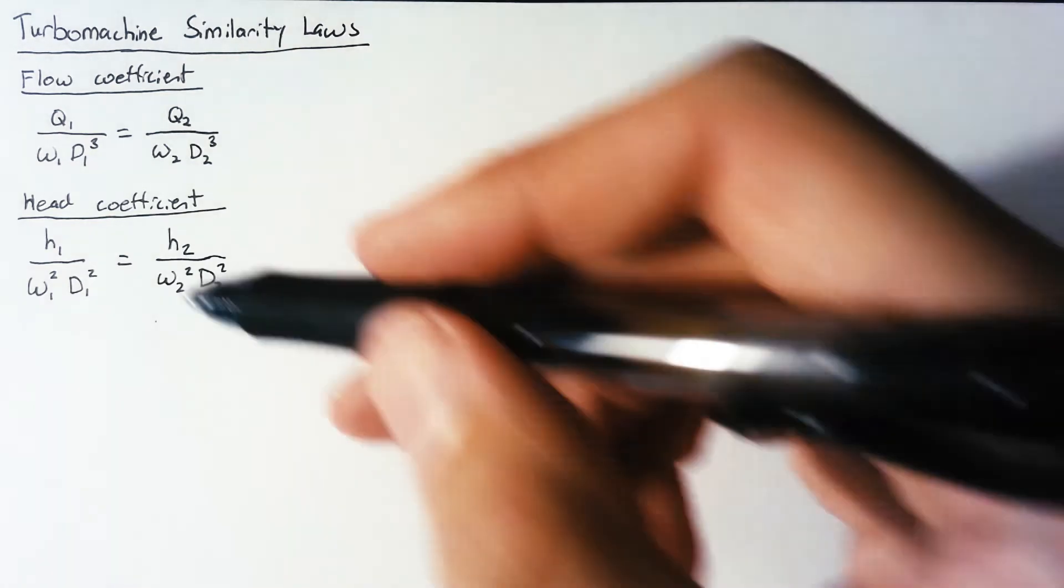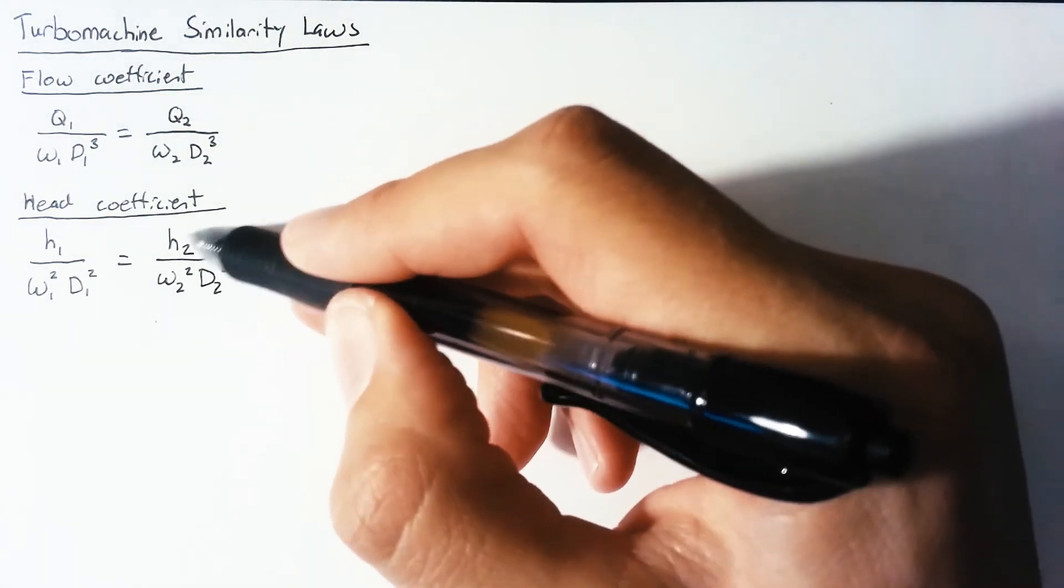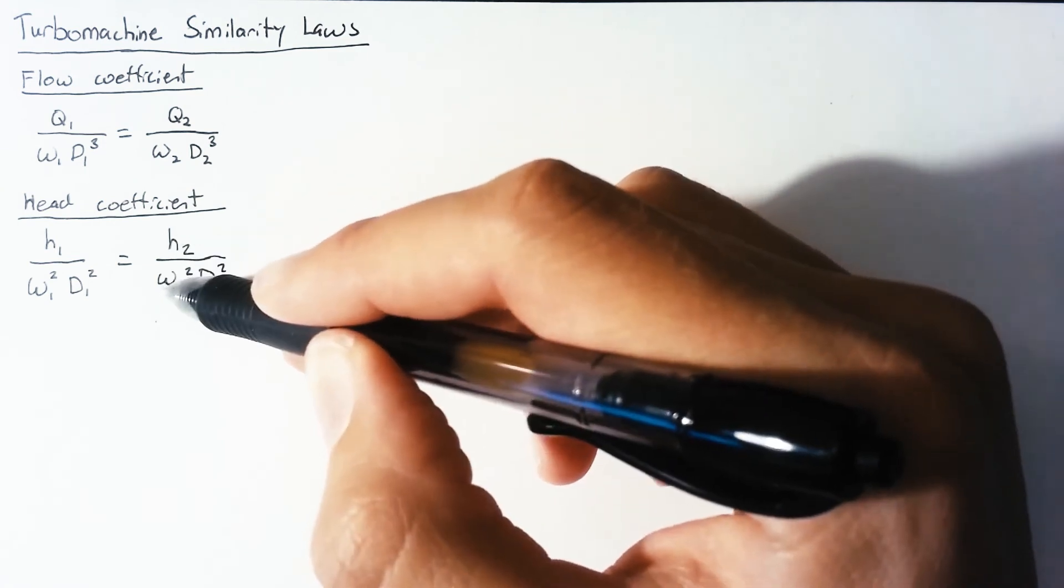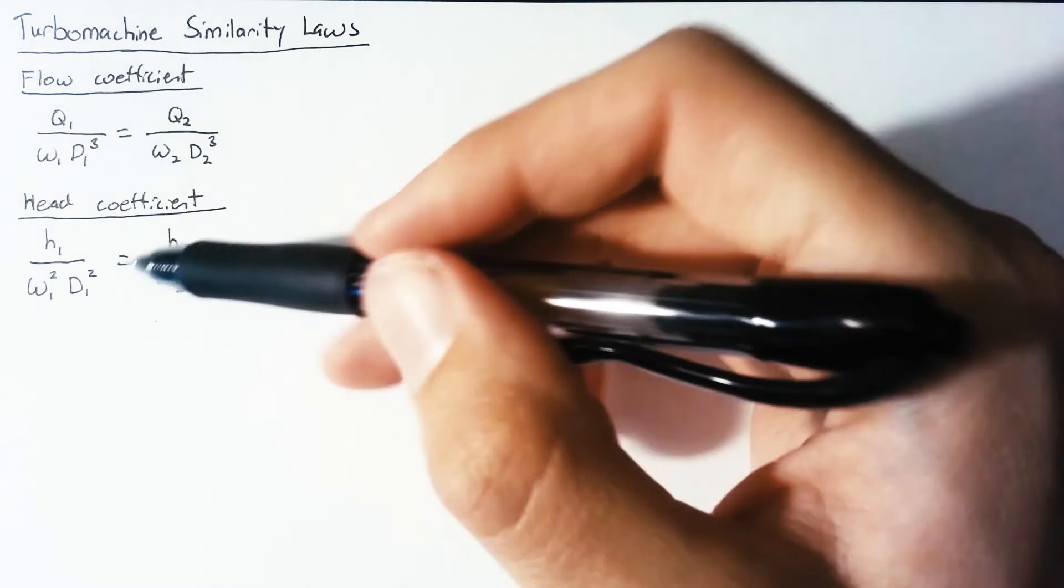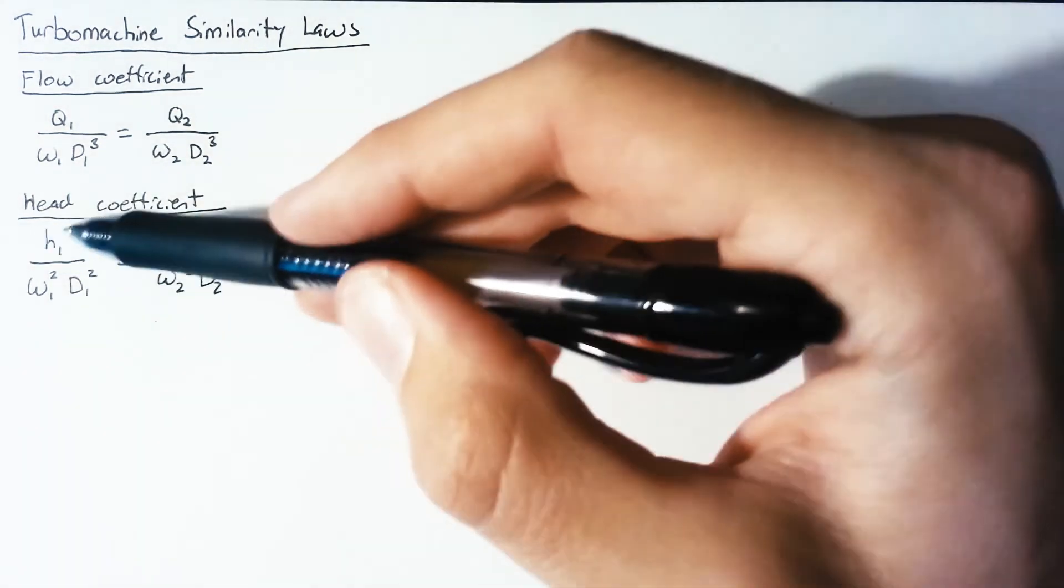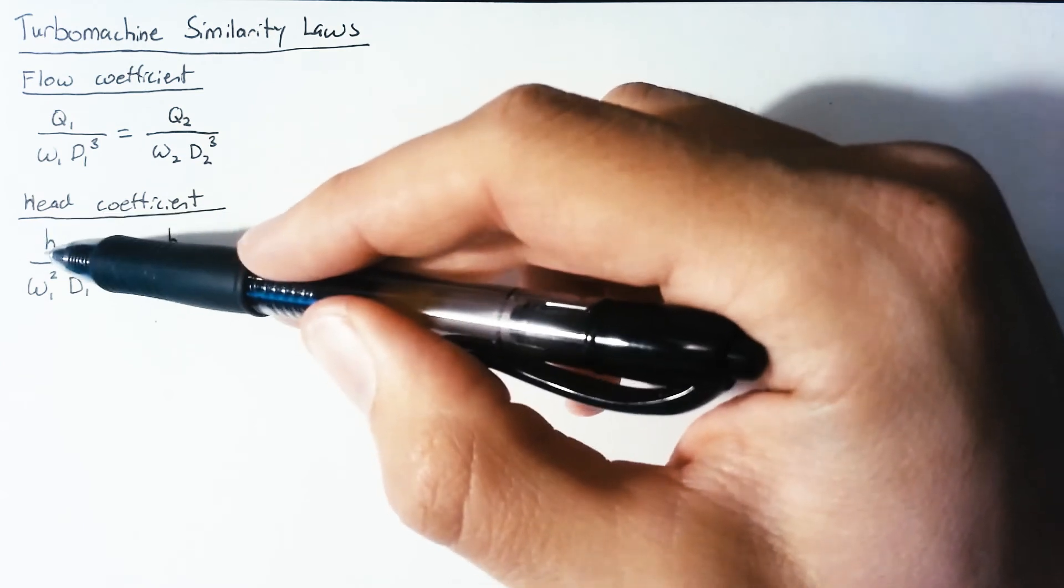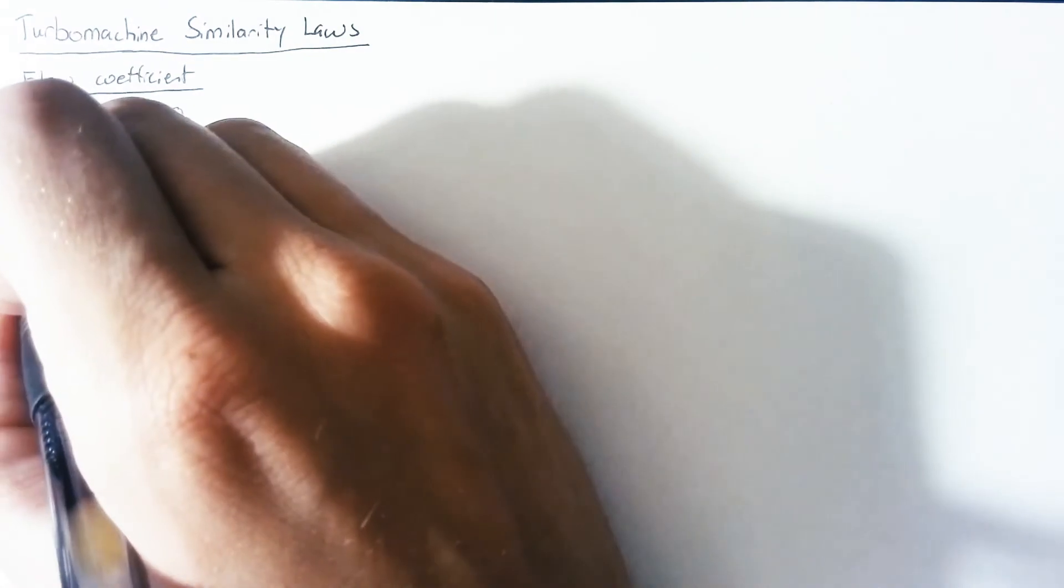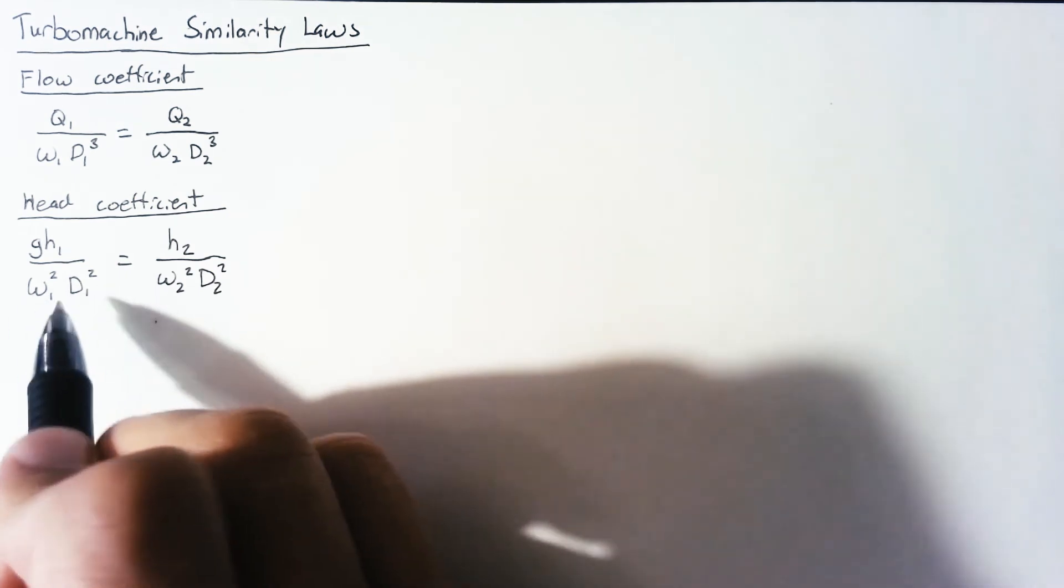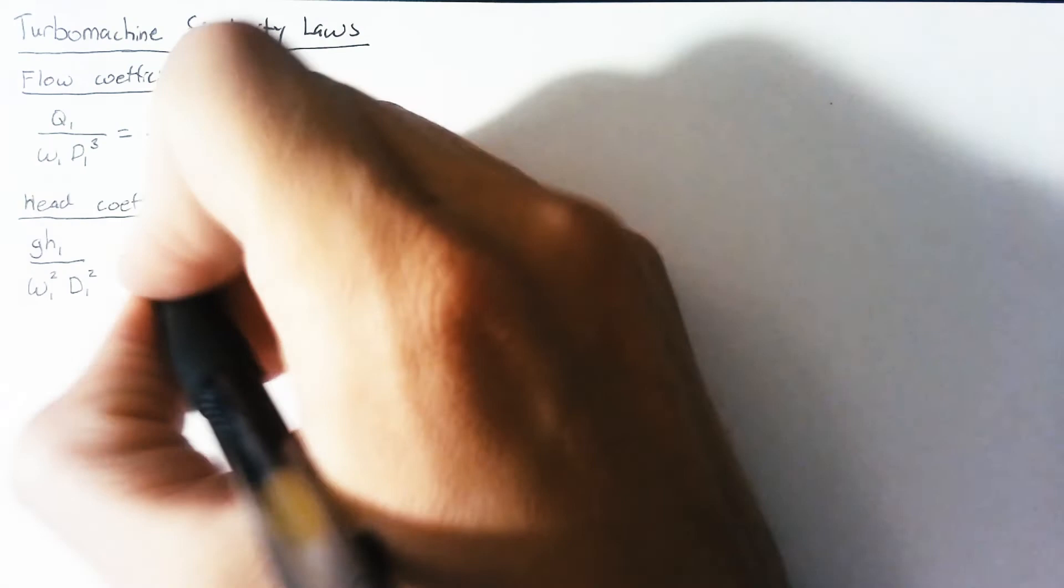You may notice this is not unitless, we have units of meters over meters squared per second squared. Really what this is doing is comparing the energy and the potential energy, which is gh, by some velocity squared or some kinetic energy. So it's a ratio of potential energy to kinetic energy.